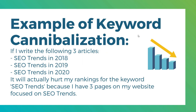So what does that mean? An example of keyword cannibalization: let's say I'm writing about SEO trends every single year. In 2018 I write an article 'SEO trends in 2018 to follow,' in 2019 I write the same article updated for 2019, and in 2020 I write the same exact article again. So I have three different articles on my website — one for 2018, one for 2019, one for 2020. This can actually hurt your rankings for the keyword 'SEO trends' because Google is deciding which page to rank for that search term, and essentially you're hurting your own website.